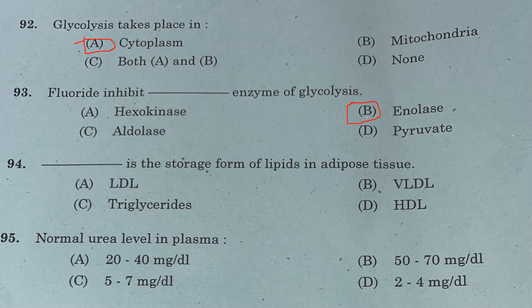Question 94: What is the storage form of lipids in adipose tissue? Option A: LDL. Option B: VLDL. Option C: triglycerides. Option D: HDL. Answer is Option C, triglycerides.